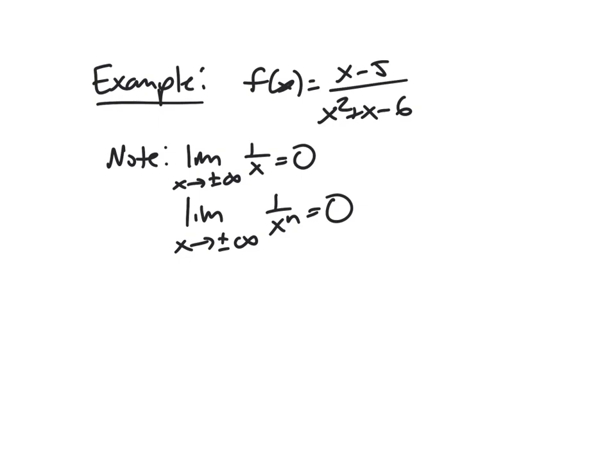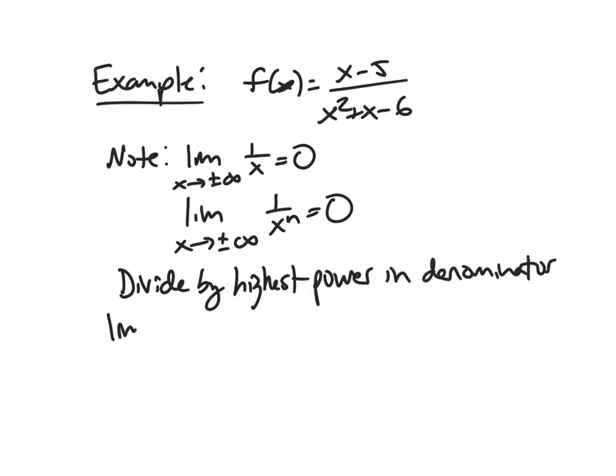Why is this useful? Well, what we're going to do is divide everything by the highest power in the denominator. So in this case, for f(x), that's going to be x squared. So when we look at this, what's my limit as I approach infinity of x minus 5 over x squared plus x minus 6? So I'm going to divide by x squared, so multiply by 1 over x squared on each. That's just 1, so I'm not changing my limit.